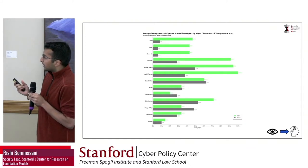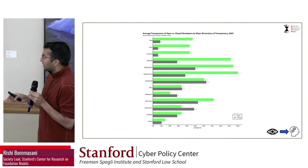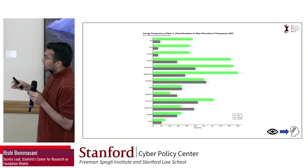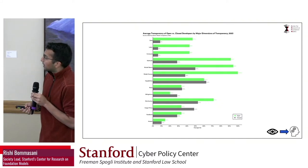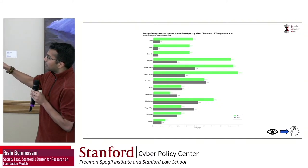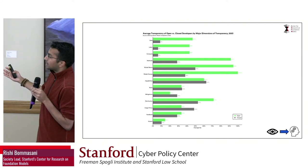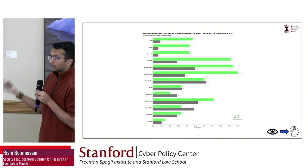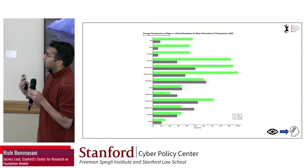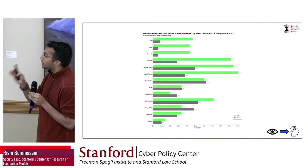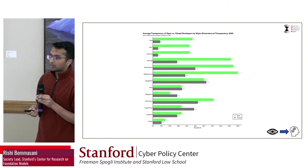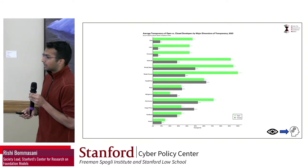That's the end of the first part of the talk on transparency. As a segue to the topic of open models: in our assessment of 10 companies, three of them — Meta, Stability, and Hugging Face — release their models openly; the other seven do not. There's a pretty clear empirical disparity between the amount of transparency from the open actors versus the more closed actors. This will come up in the second portion.